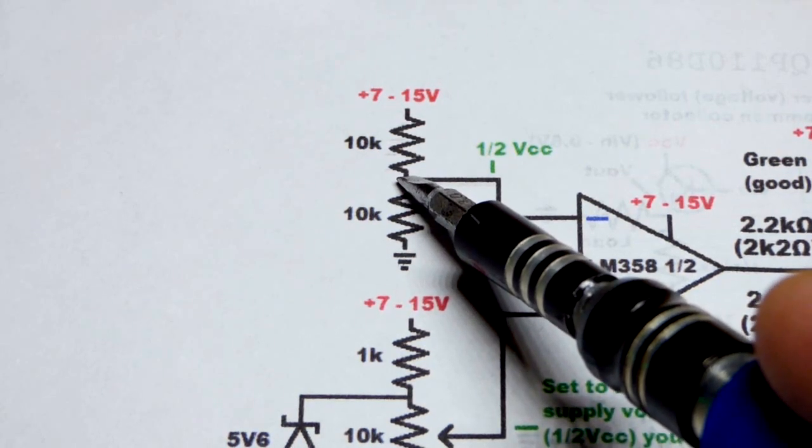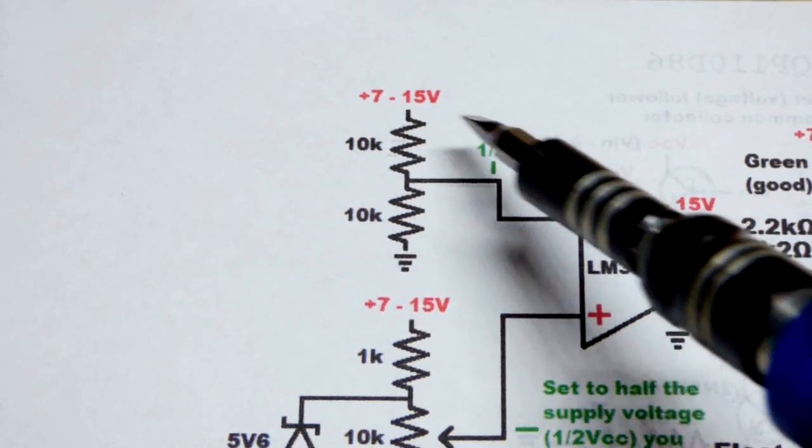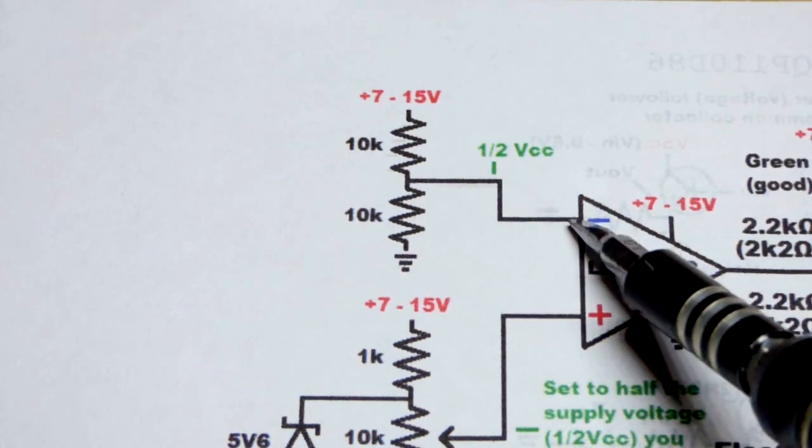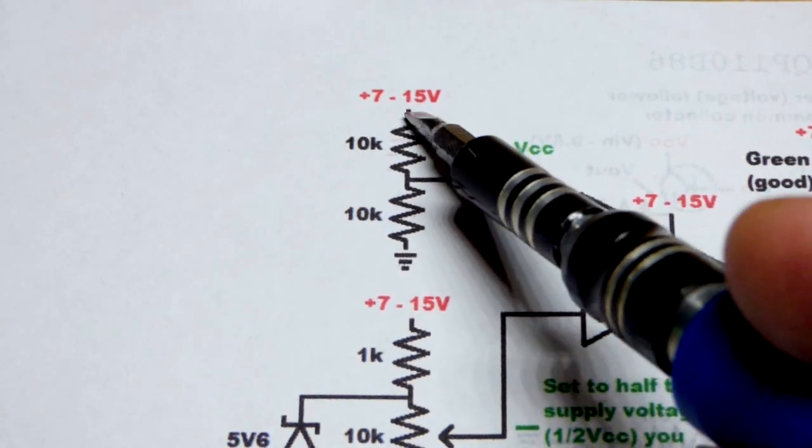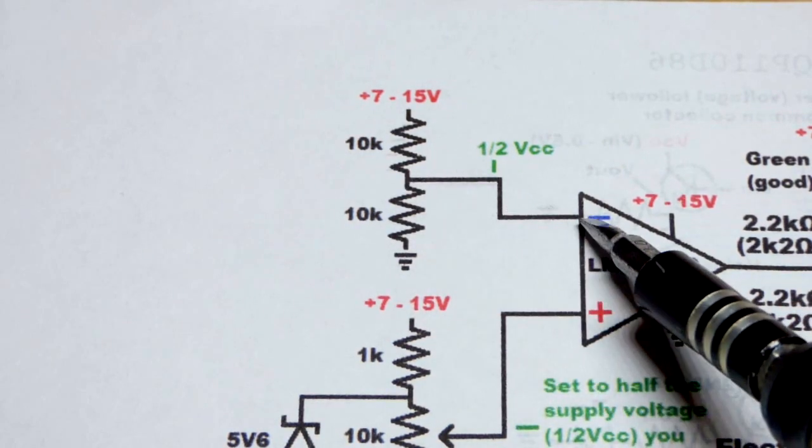Two equal values, we tap it in the middle, we get half of the supply voltage. If we set this to 8 volts, we'll have 4 volts at the inverting input. If we set the supply voltage to 10 volts, we will have 5 volts at the inverting input.